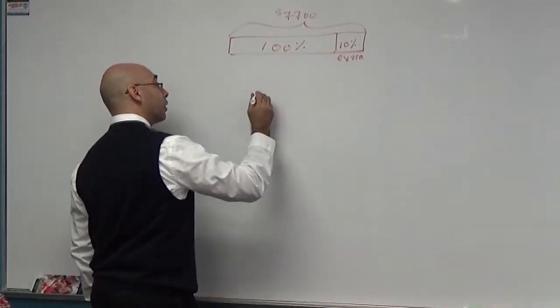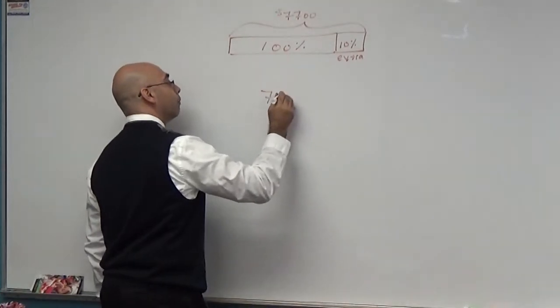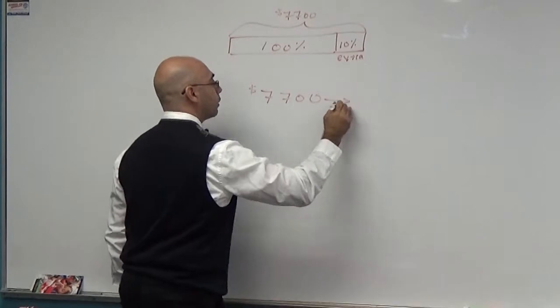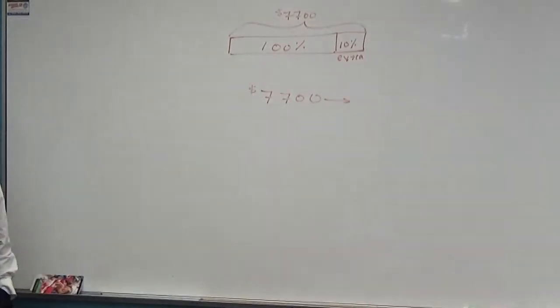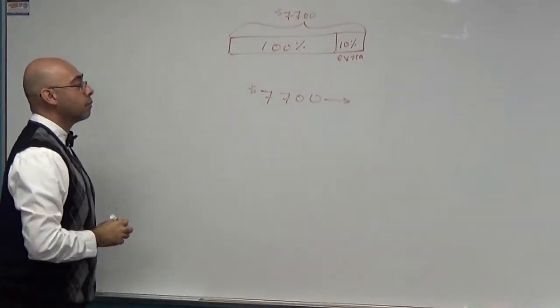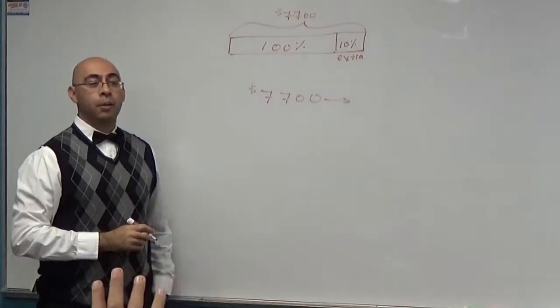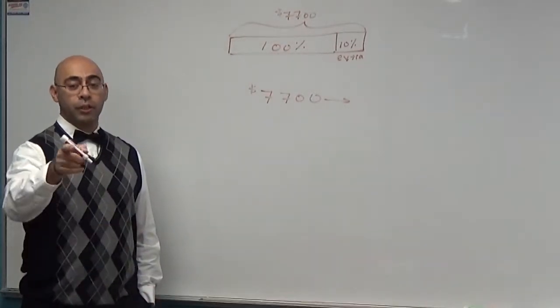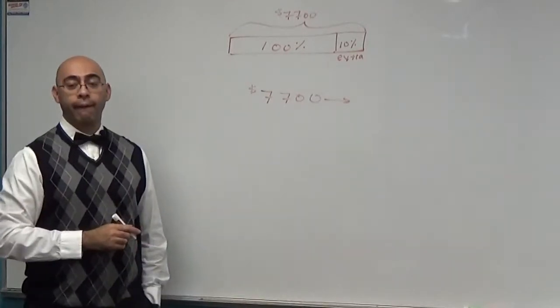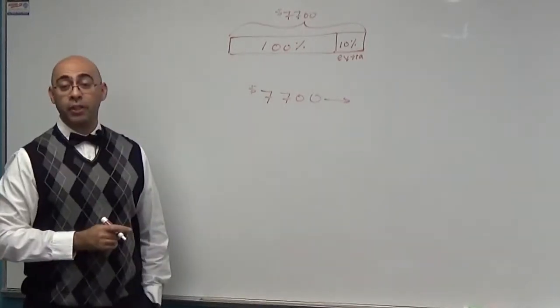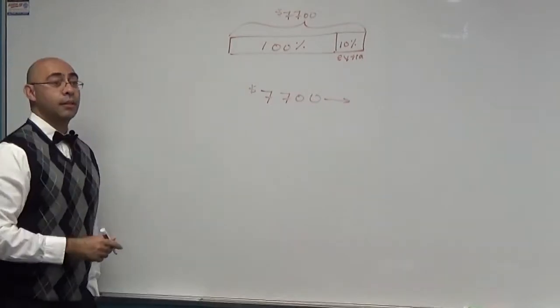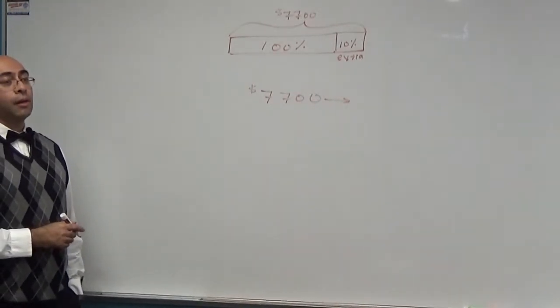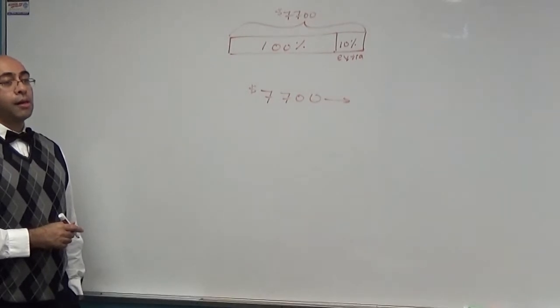By looking at the picture, what does that $7,700 represent? That represents 90%? You're not looking at the picture. 100%? You're still not looking at the picture. The whole. What is the whole thing? $7,700. Yes. The whole is 100% plus 10% extra.